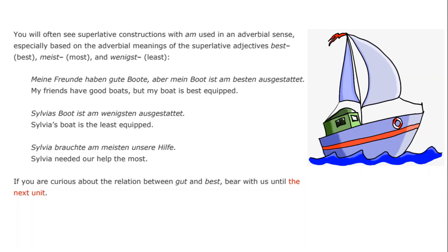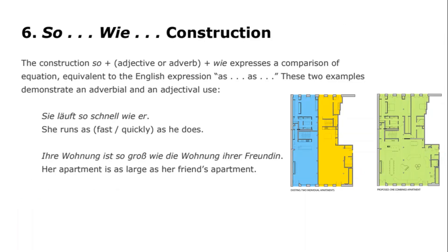Of course, the relation between "gut" and "best" as an irregular comparison is something we will return to in greater detail in the next unit. We now move on to the "so...wie" construction, in which we have the ability to express a comparison of equality equivalent to the English "as...as." For example, "sie läuft so schnell wie er" (she runs as quickly as he does); "ihre Wohnung ist so groß wie die Wohnung ihrer Freundin" — her apartment is as large as her friend's apartment.